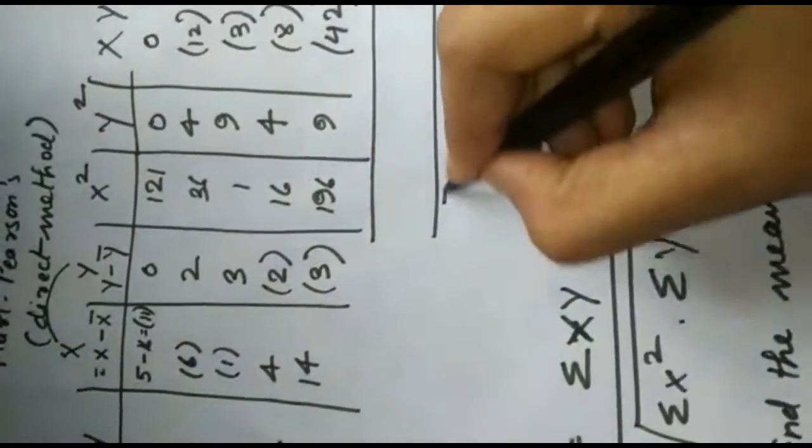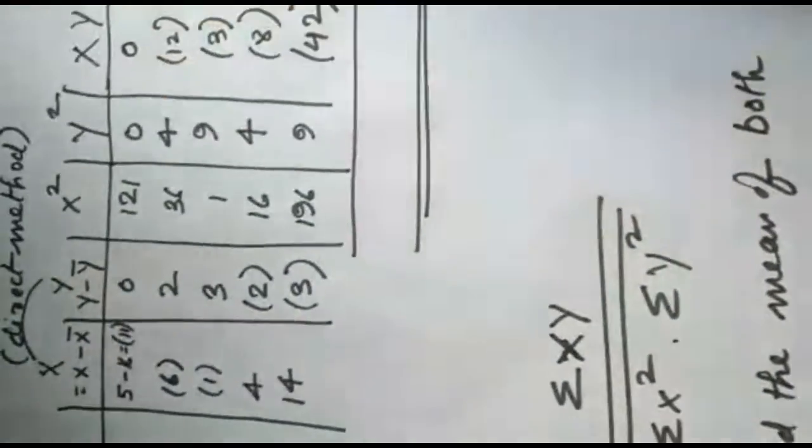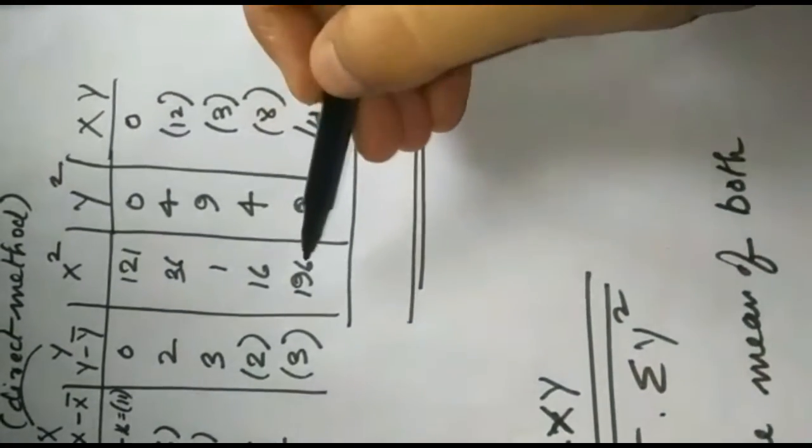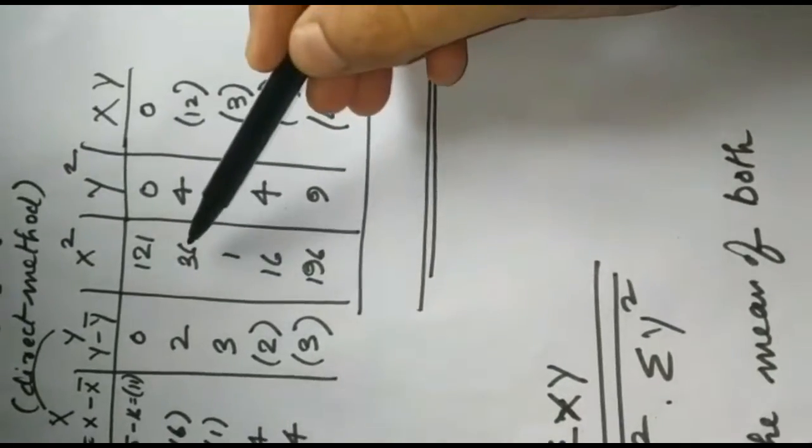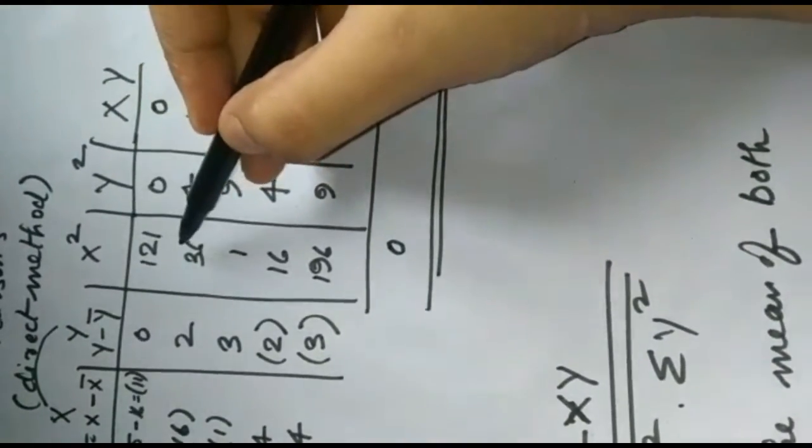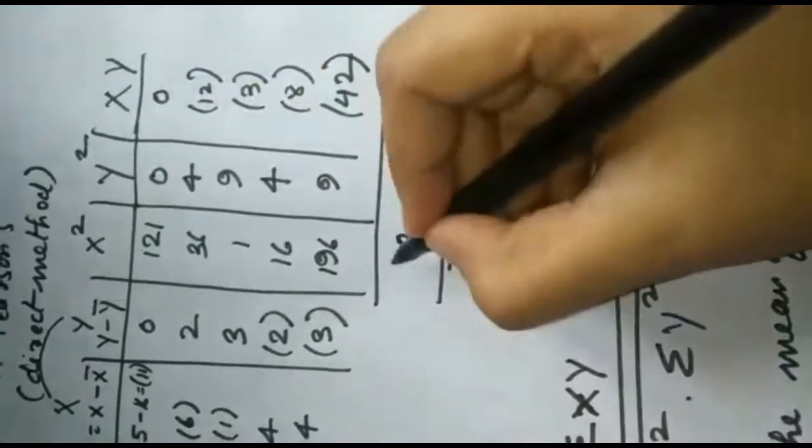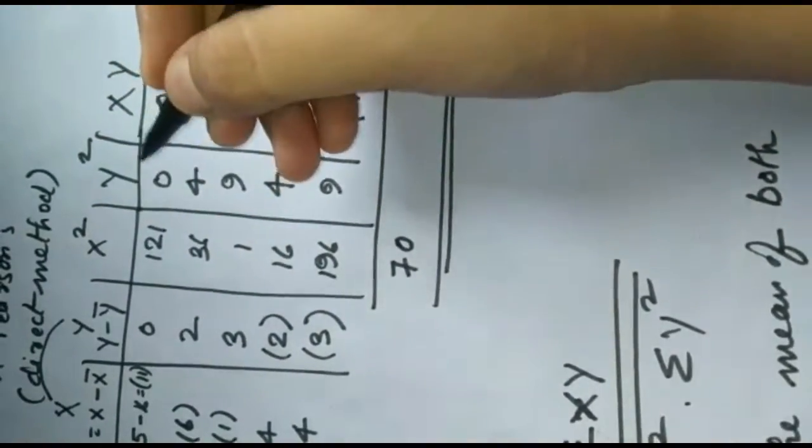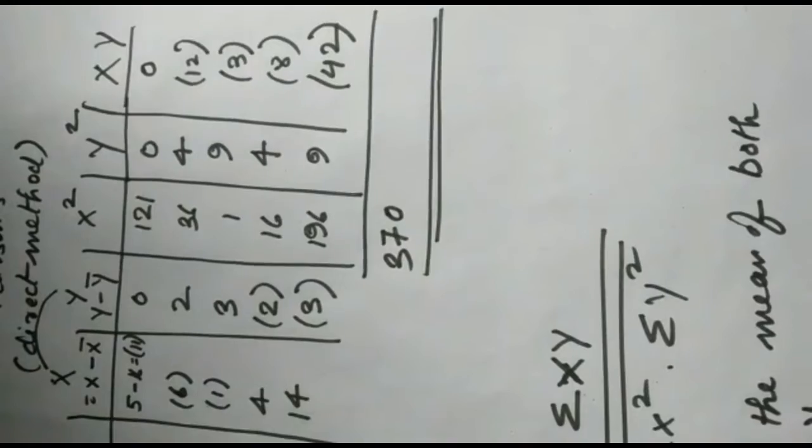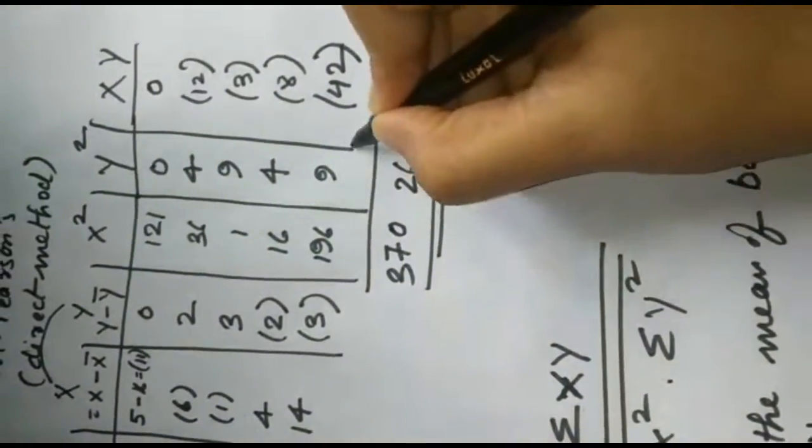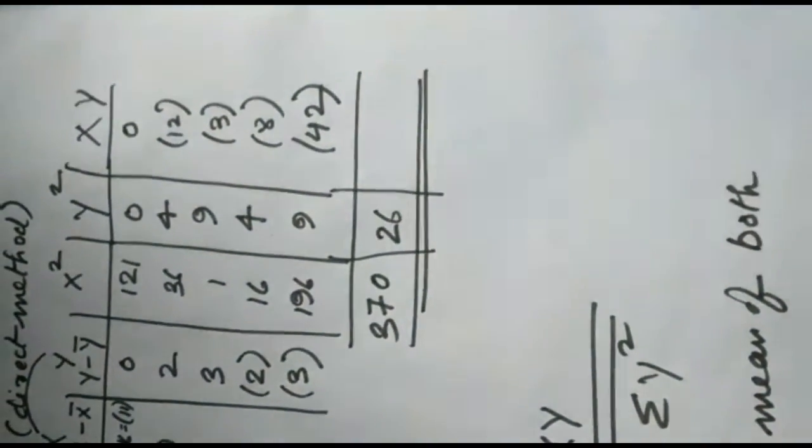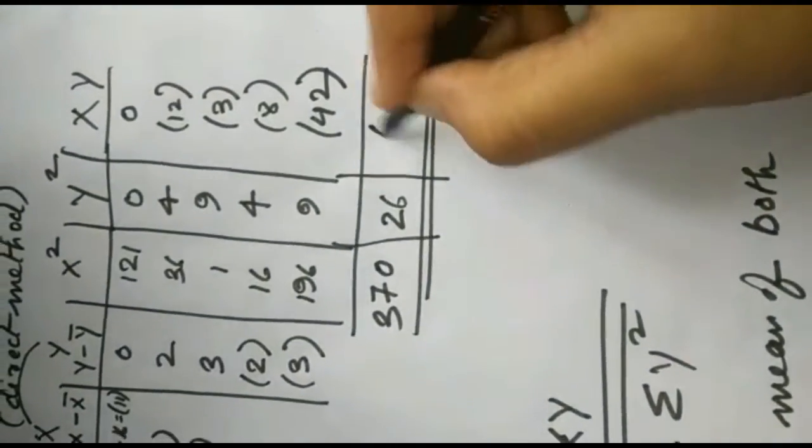Now we are going to add all these three. So here the answer will be 370, and here will be 26, and here it will be minus 65.